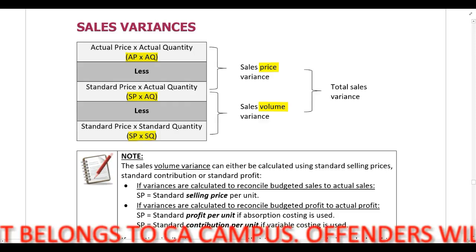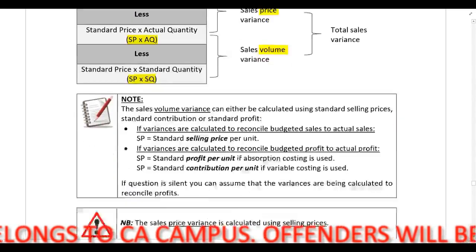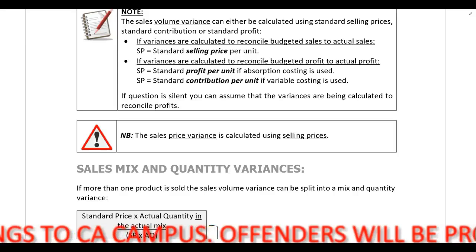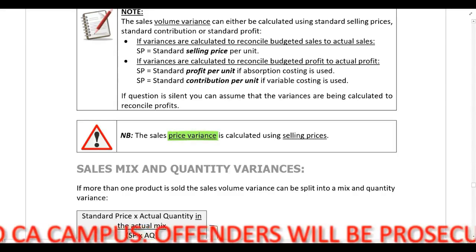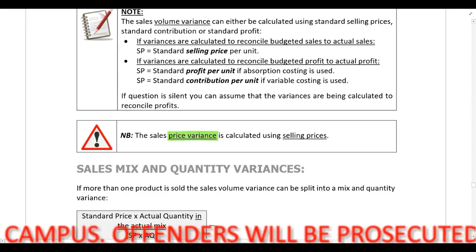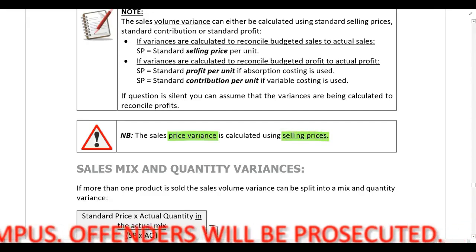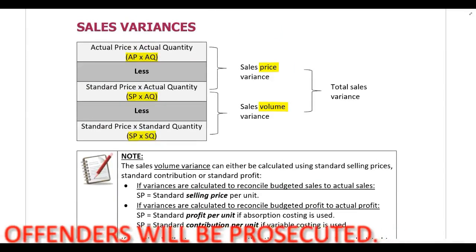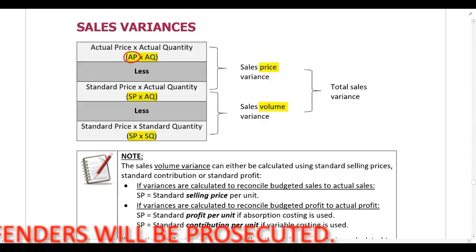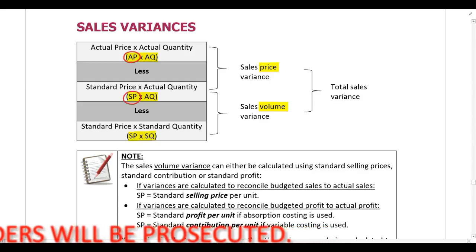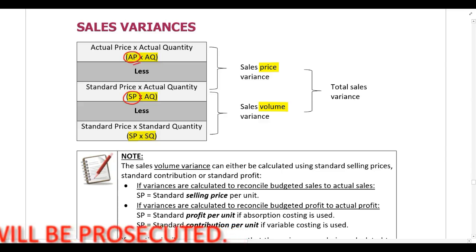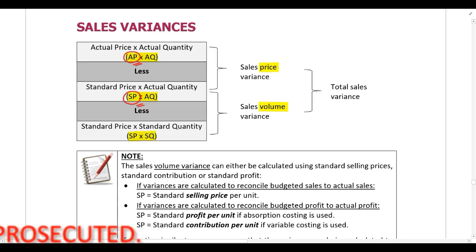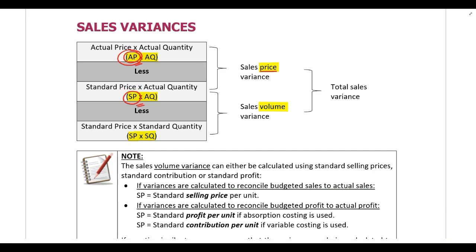It's important to note that when performing these calculations, the sales price variance is always calculated using selling prices. With the sales price variance we are comparing the actual price to the standard price — specifically the actual selling price and the standard selling price. When calculating the sales price variance, you always use selling prices: the actual selling price and the standard selling price.